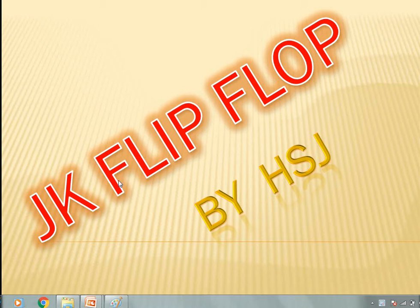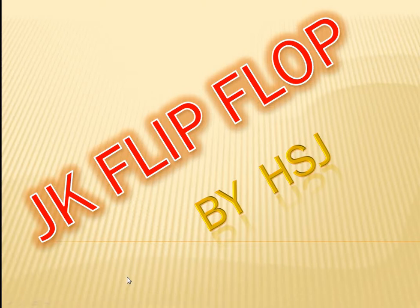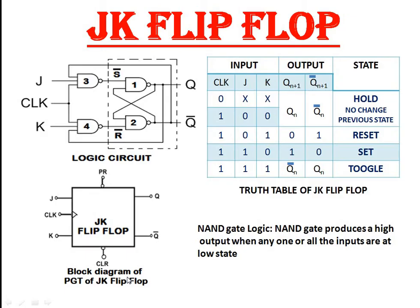Today I am going to explain the working of JK flip-flop. JK flip-flop consists of four NAND gates, wherein two are made up of three inputs and the other two are of two inputs. This stage consists of an S̄R̄ latch. So JK flip-flop can also be explained with the help of an S̄R̄ latch.